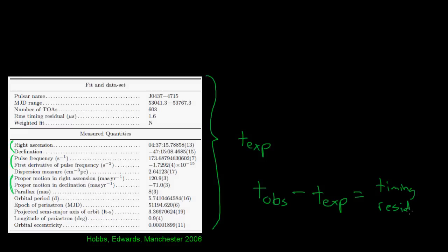It is this quantity — the timing residual — that contains all of the information about gravitational waves. So once we find these timing residuals, we can hopefully learn something about gravitational waves.